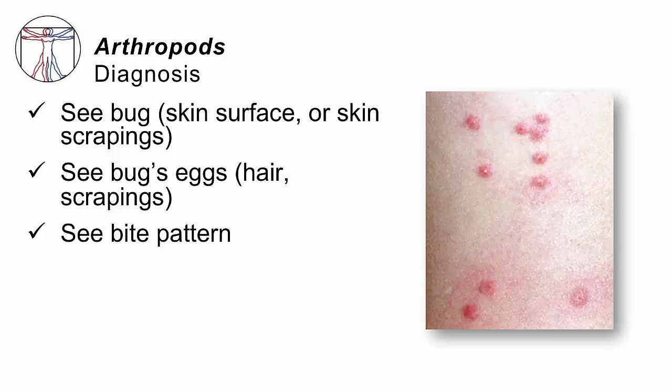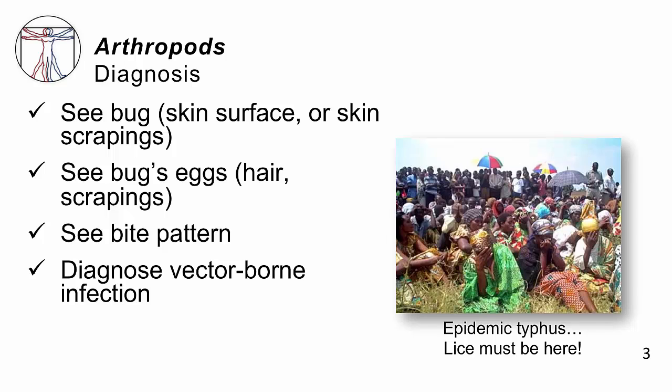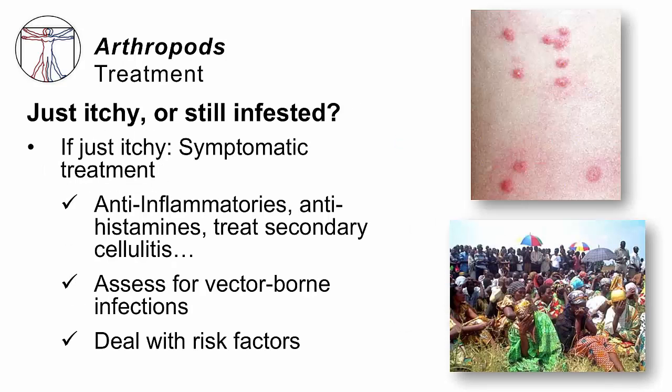Sometimes you won't see either the eggs or the adults — you just see that bite pattern. If you're astute and you recognize a linear bite pattern, you can say the bug is gone, but I know you've been bitten. And sometimes you won't see any skin findings at all — you just make a diagnosis of a clinical illness. For example, epidemic typhus. If you see epidemic typhus, then you know that these patients have clothing and belongings infested with lice, and we have to decontaminate them.